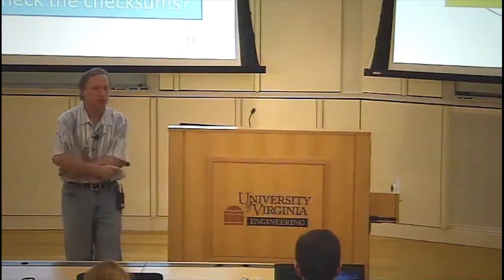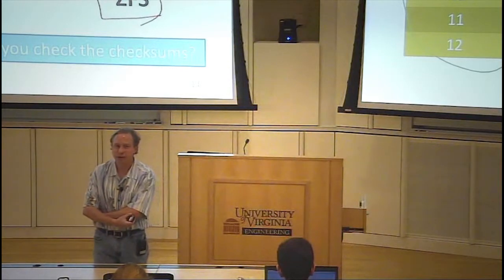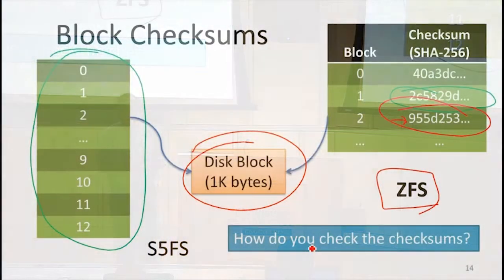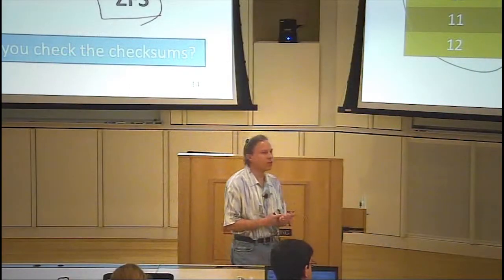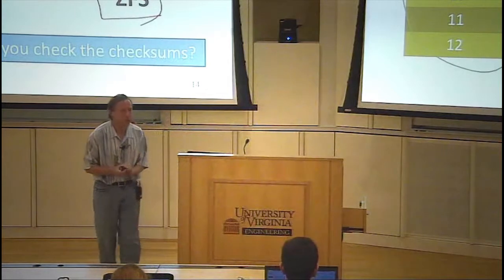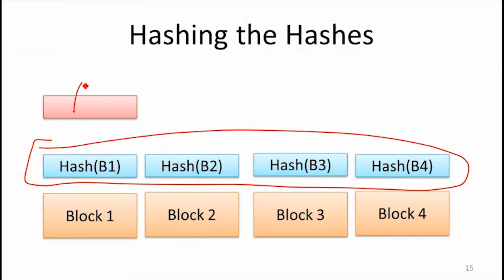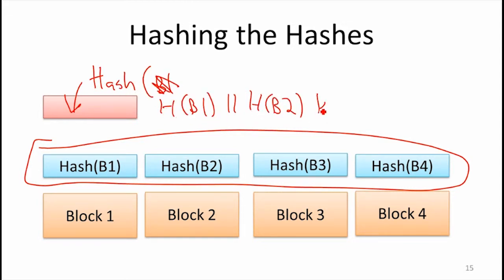We don't want to just trust that the block matches the checksum — we want to make sure the checksums are correct too. So how do we make sure the checksums are correct? We can compute a hash of the blocks and store that in the table, and then compute a hash of the checksums and store that. The first approach would be to compute all the hashes — the hash of B1, B2, B3, and B4 — and store the combined hash of all of those hashes.